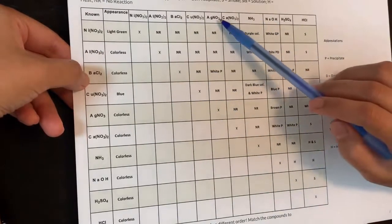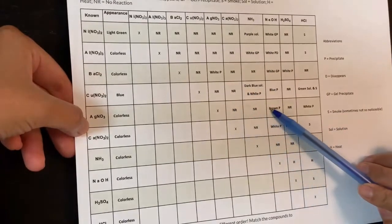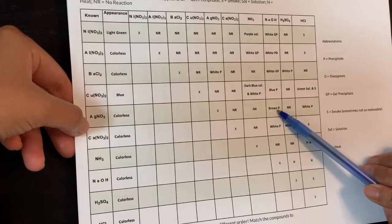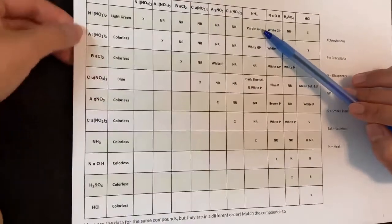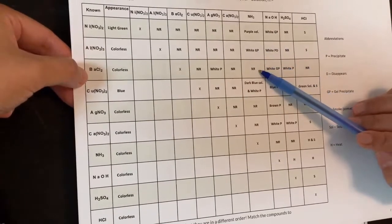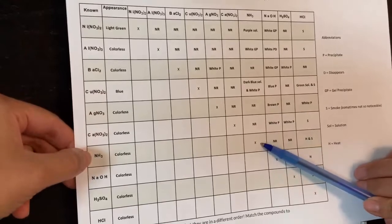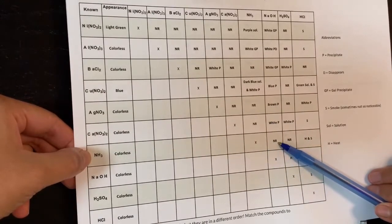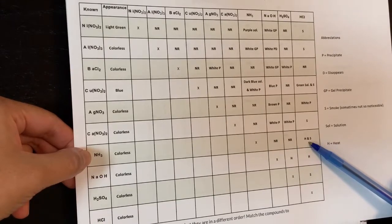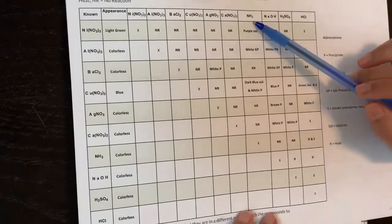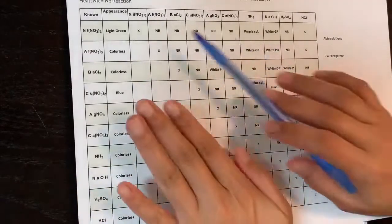For example, silver and barium is a white precipitate — hit the X, that's silver. Turn right: silver and sodium hydroxide is a brown precipitate, and silver and HCl is a white precipitate. Ammonia is really interesting: ammonia with nickel is a purple solution, with aluminum is a white gel precipitate, with barium is no reaction, with copper is a dark blue solution and white precipitate, with silver is no reaction, with calcium is no reaction. Then ammonia with sodium hydroxide is no reaction, ammonia with H₂SO₄ is no reaction, and ammonia with HCl gives heat and smoke.